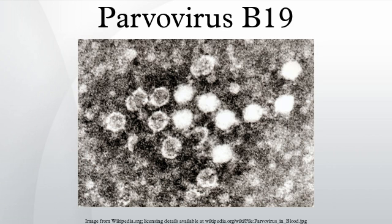AIDS: Parvovirus B19 is a cause of chronic anemia in individuals who have AIDS. It is frequently overlooked. Treatment with intravenous immunoglobulin usually resolves the anemia, although relapse can occur. The parvovirus infection may trigger an inflammatory reaction in AIDS patients who have just begun antiretroviral therapy.